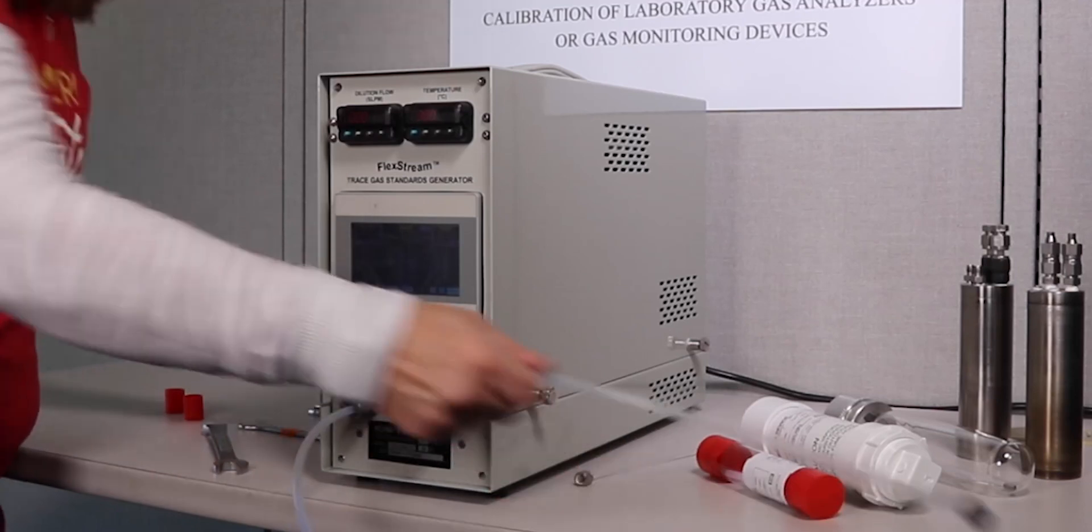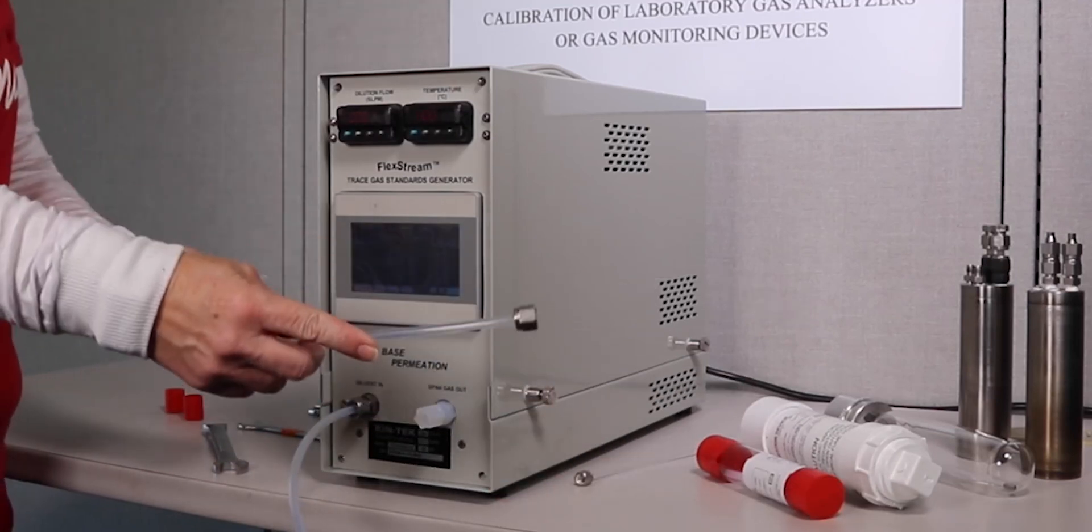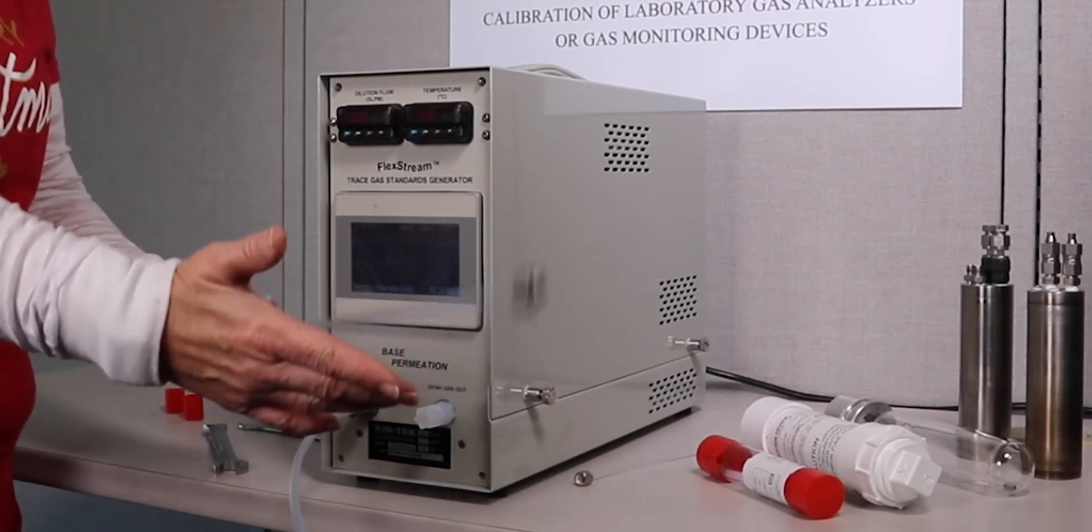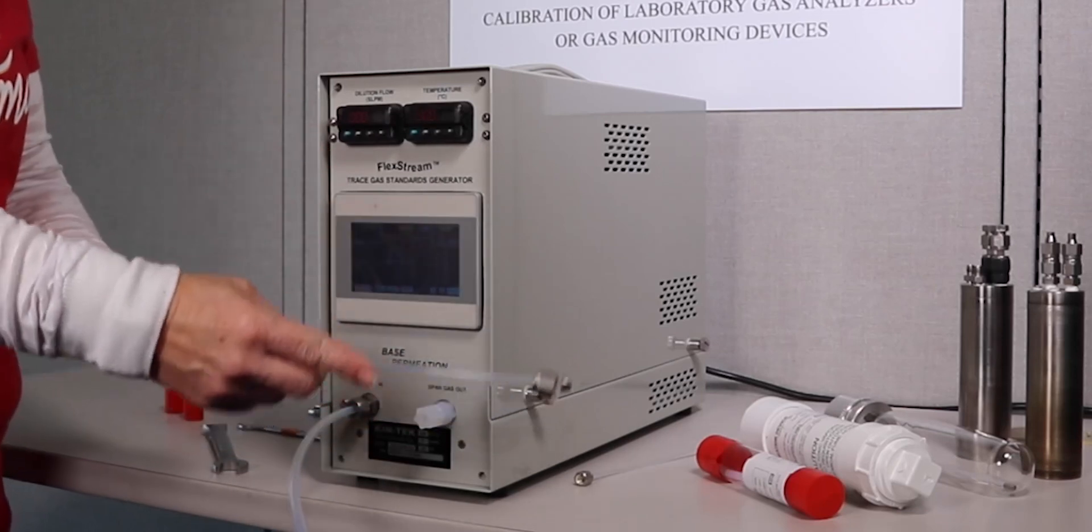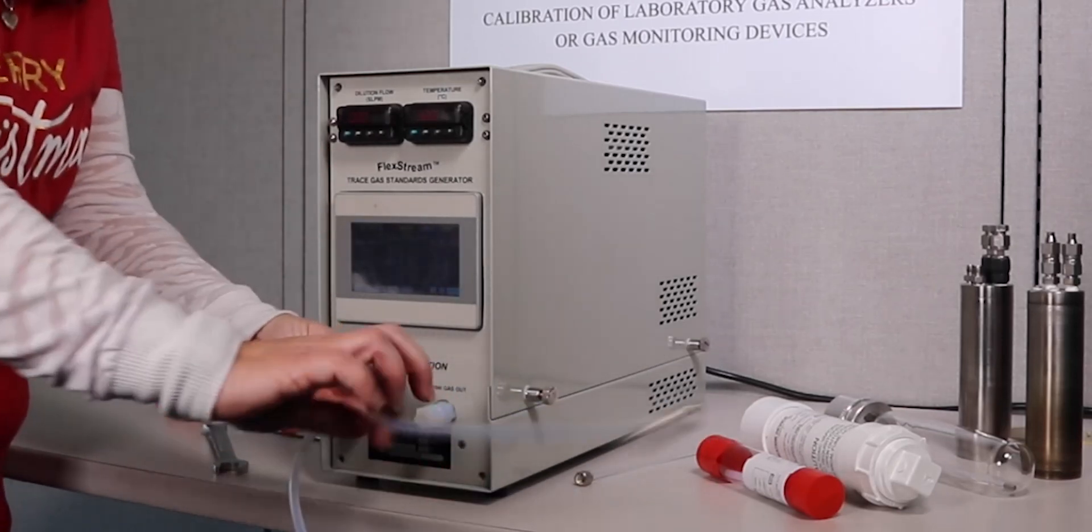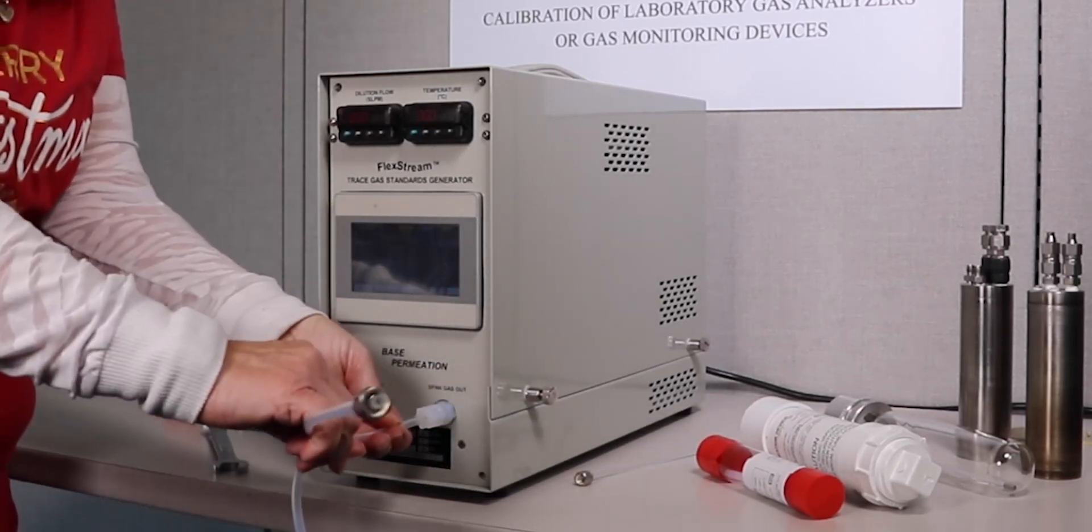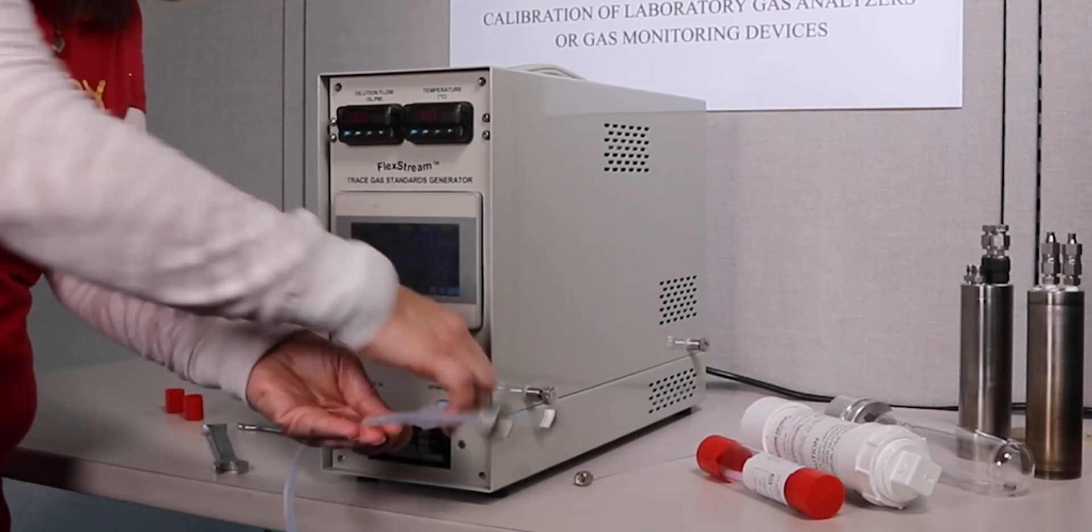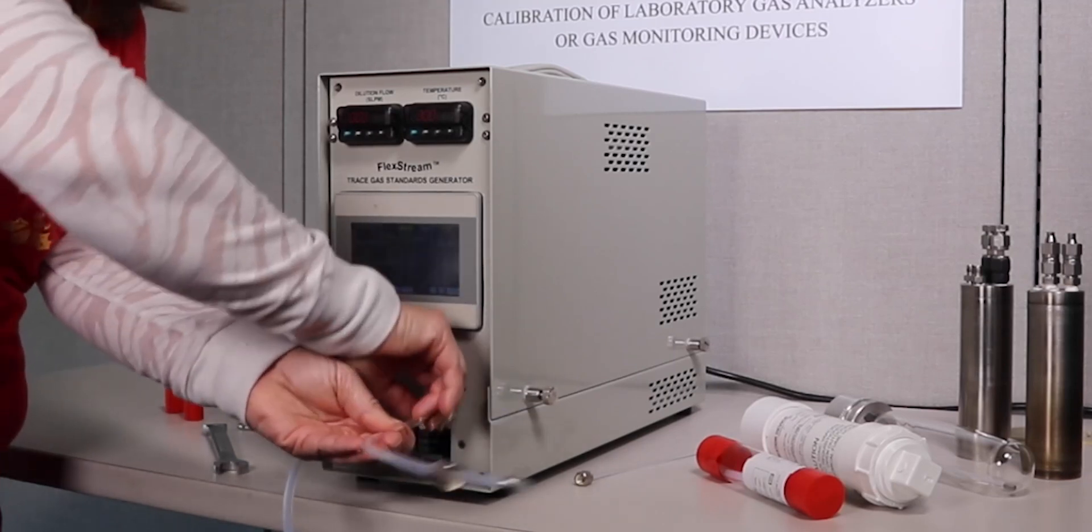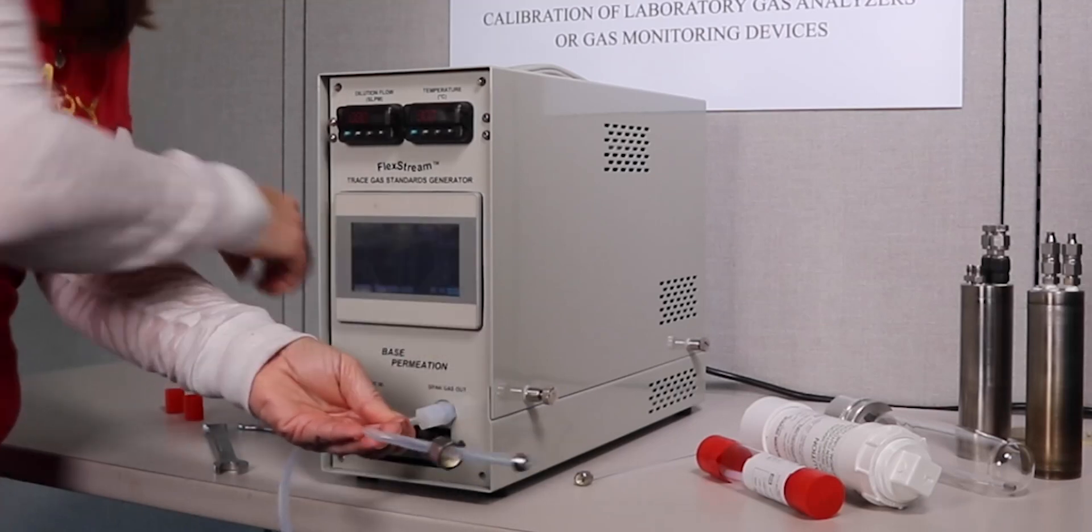I then have an output line that I want to connect. This would actually connect to an analyzer or a detector or any type of device under test. Again, I'm using quarter inch Teflon tubing. I slide this into the Teflon fitting and I use a 5/8 wrench to tighten this.